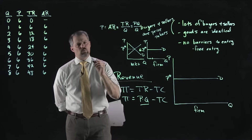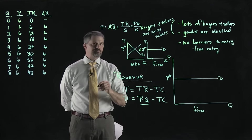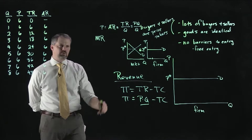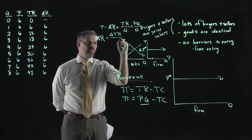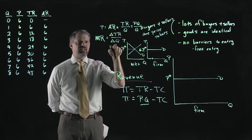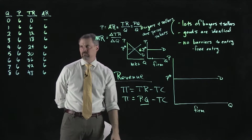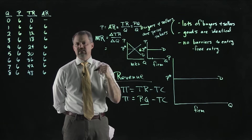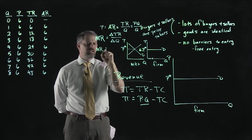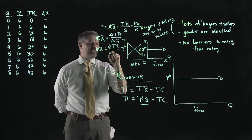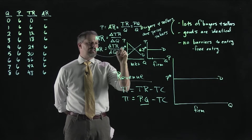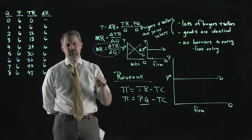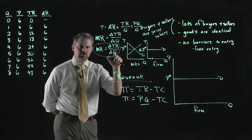Finally, we can calculate marginal revenue, abbreviated MR. Marginal revenue equals the change in total revenue when you change quantity — typically a change of one unit. We can rewrite this using derivatives: marginal revenue equals dTR/dQ, which tells you that marginal revenue is the slope of the total revenue curve.